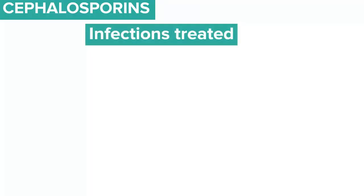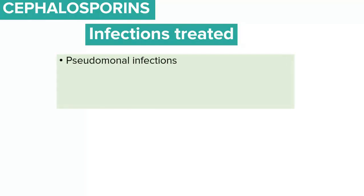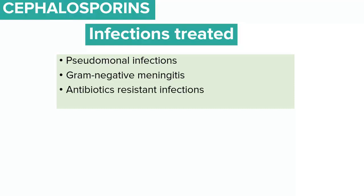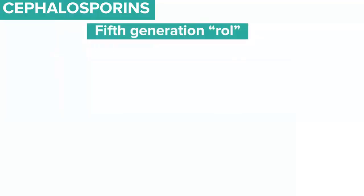The fourth-generation cephalosporins do not have activity against Bacteroides fragilis. They are used to treat serious gram-negative bacterial infections and meningitis, as they can cross the blood-brain barrier. They are also used in the treatment of antibiotic-resistant infections.